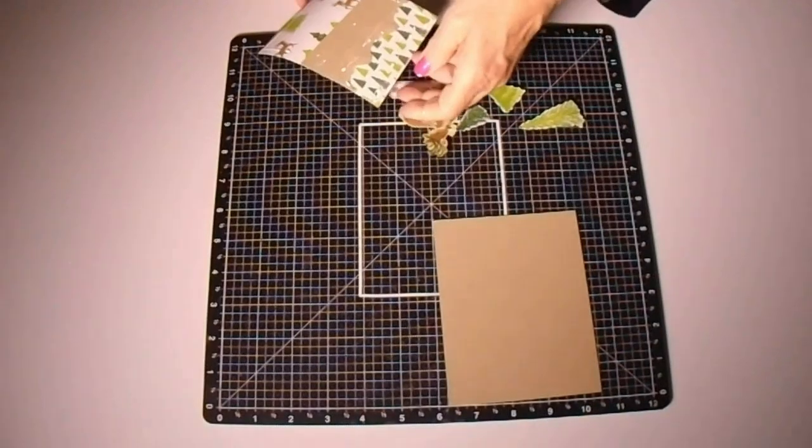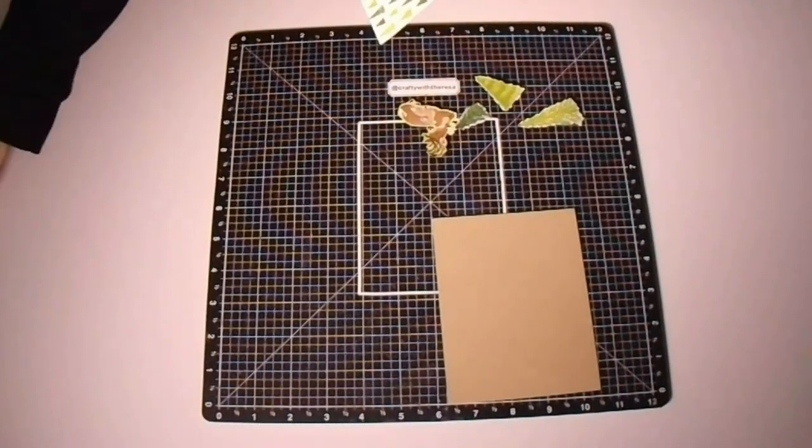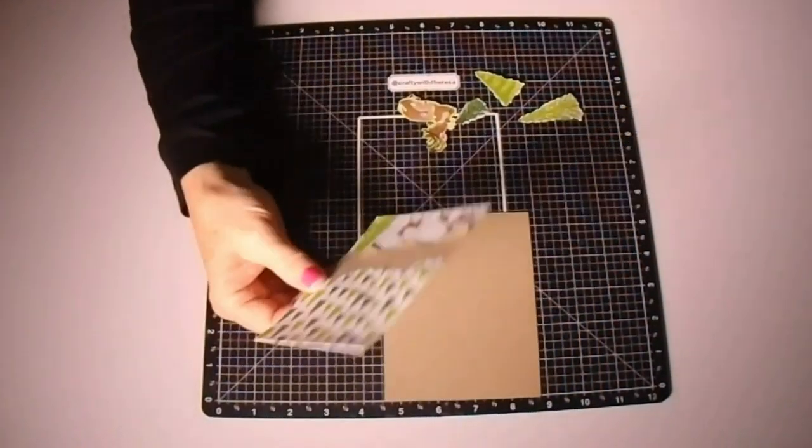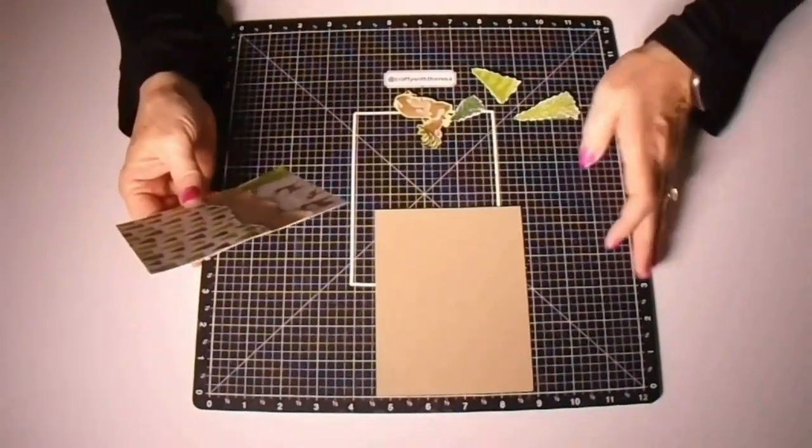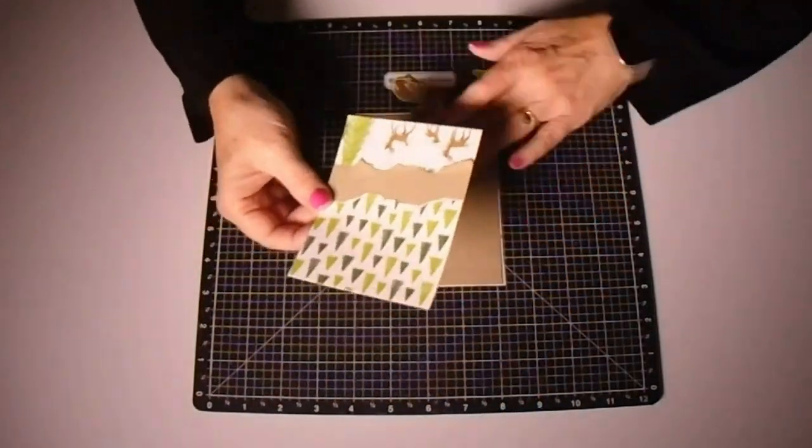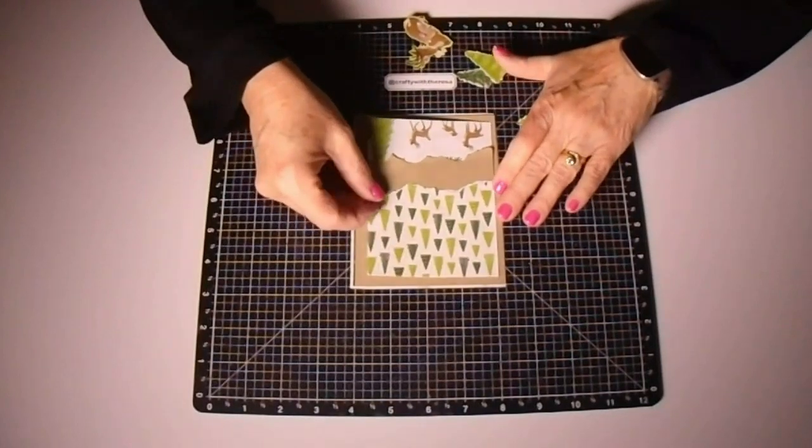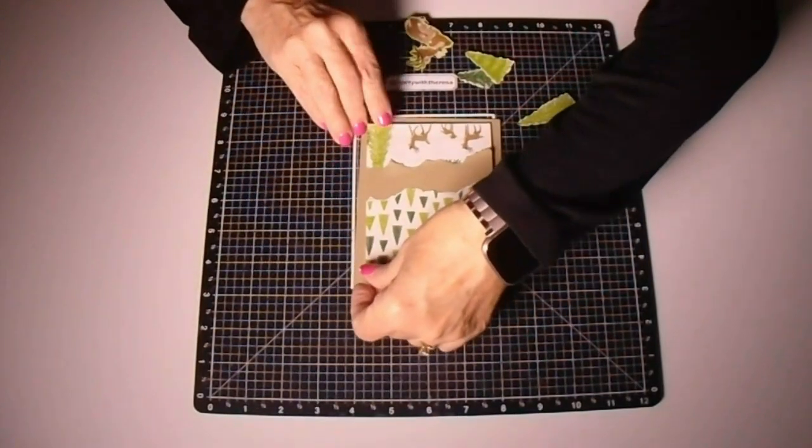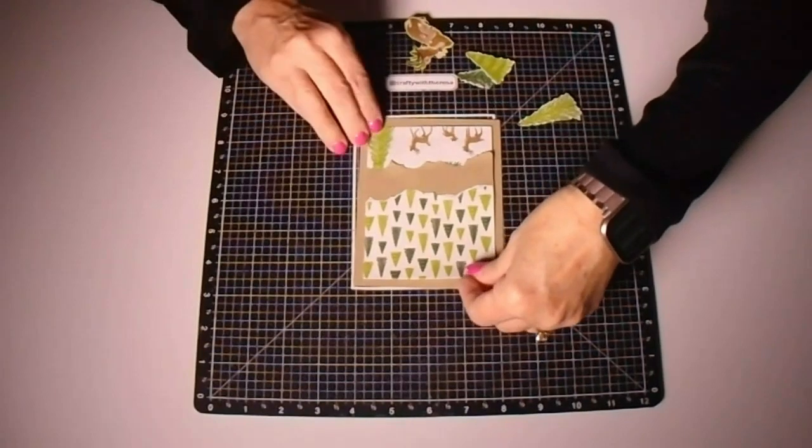Once I have them where I want them I'll actually put that down, but before I do that I'm going to glue this base piece together. With my torn pieces I'll glue it on top of the crumb cake which is four and a quarter by five and a half.